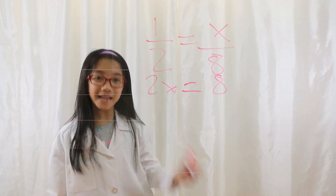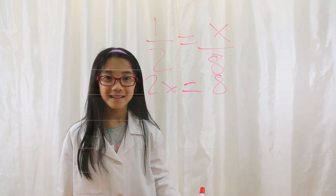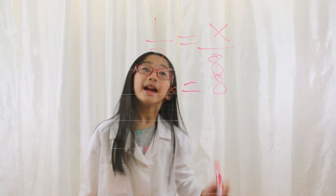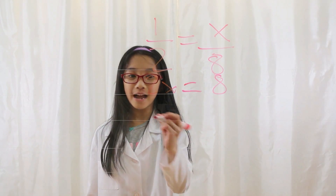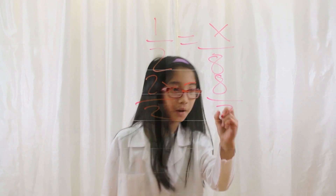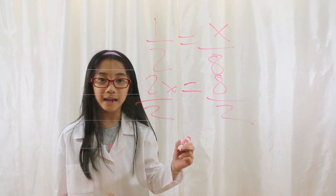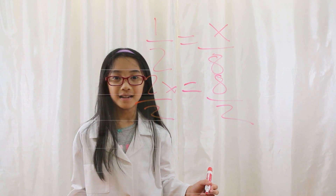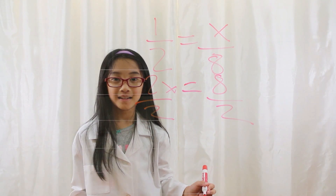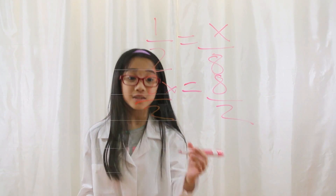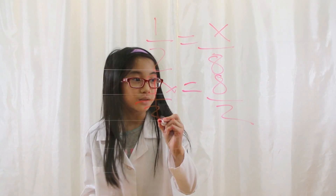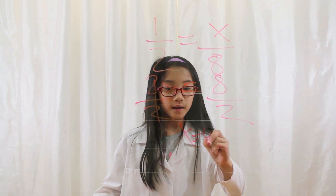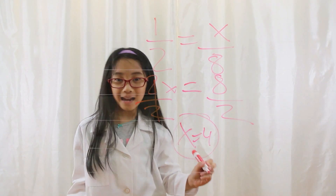What is the second step? If you said that you solve for x by dividing by 2 on both sides, you are correct. Now what is the third step? If you said that 2 divided by 2 is 1, which cancels, and 8 divided by 2 is 4, so x equals 4 — you are excellent!